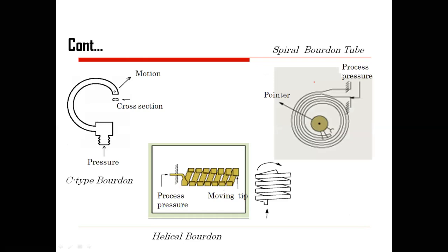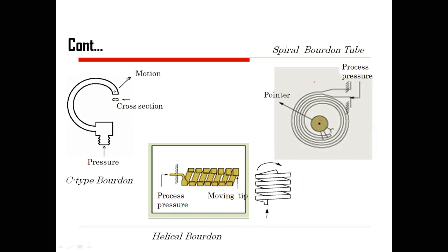This is the moving tip where connections can be made. For the helical Bourdon tube, applying pressure causes variation in the helical structure. The C-tube moves in the upward and downward direction. This is the spiral one — applying pressure causes expansion and the pointer gives the corresponding movement. Each type expands after applying pressure and those changes are highlighted by the pointer in the Bourdon tube.